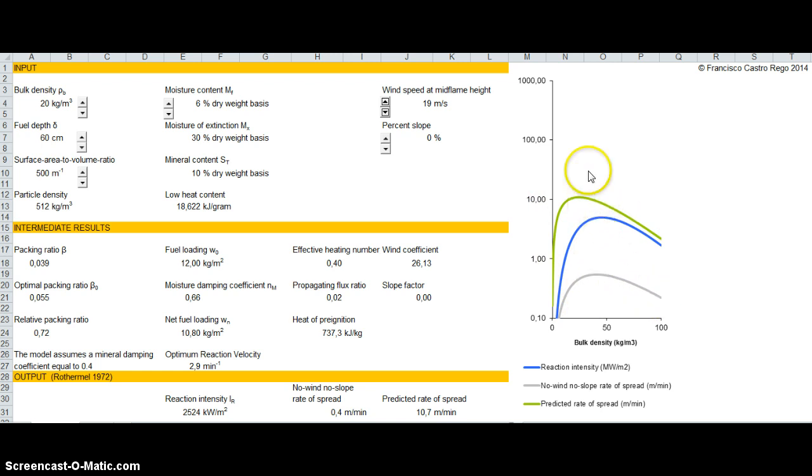Of course, this is a very high wind speed, 19 meters per second, but even so, if you get to zero, the two curves are the same. If we increase a little bit the wind speed, even to one meter per second, then you almost duplicate the—well, this is a logarithmic scale—so you increase dramatically the rate of spread, from 0.4 to 3.7 meters per minute.